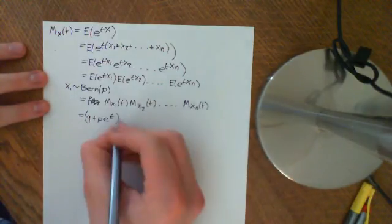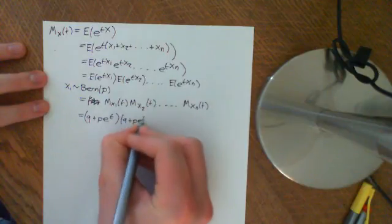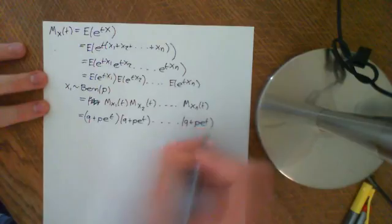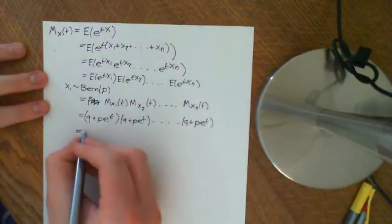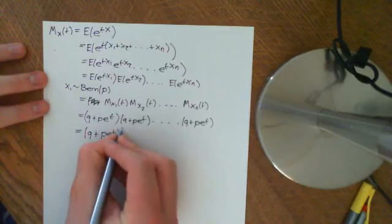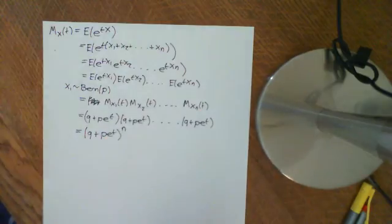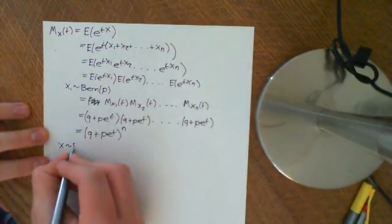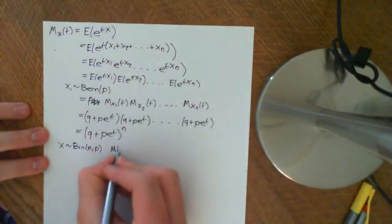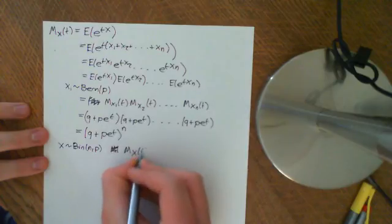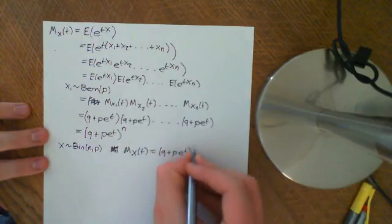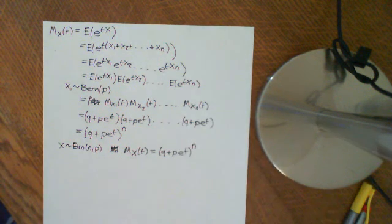We're going to have that n times: (q + p·e^t) times (q + p·e^t) ... up to the nth factor. So the moment generating function of the binomial distribution is (q + p·e^t)^n. In summary, if X is binomially distributed with parameters n and p, then the moment generating function of X as a function of t equals (q + p·e^t)^n, where q = 1 − p.